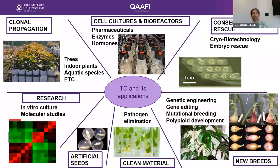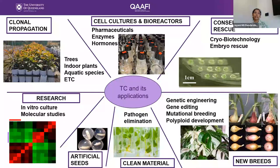Another crucial component is pathogen elimination, which is very important for our agriculture and horticulture sector. For potatoes and especially strawberries, we need pathogen elimination using cryotherapy and thermotherapy techniques. Artificial seeds are another technique where we can produce large amounts of somatic embryos through tissue culture and encapsulate them in alginate beads, then desiccate and store them — highly valuable for reforestation. Tissue culture is also integral to in vitro culture and molecular studies going hand in hand.